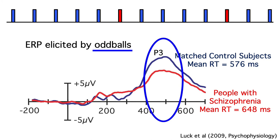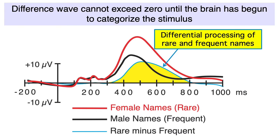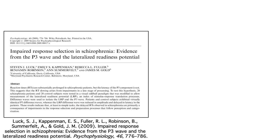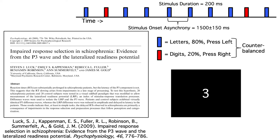However, previous studies focused on the oddball trials, not the rare-frequent difference wave. As you'll recall from a previous video, the rare-frequent difference wave can't exceed zero until the brain has begun to determine whether the stimulus belongs to the rare category or the frequent category. The latency of the difference wave therefore tells us about the amount of time required to perceive and categorize the stimuli. With that in mind, our study examined the rare-frequent difference wave in people with schizophrenia and matched control subjects. We presented letters and digits in the center of a computer monitor with one stimulus every 1500 plus or minus 150 milliseconds. The task was to press one button for letters and another button for digits. One category was rare and the other was frequent, but everything was counterbalanced.